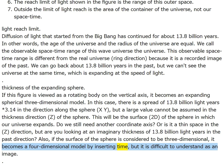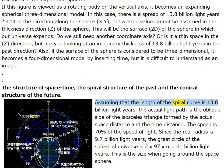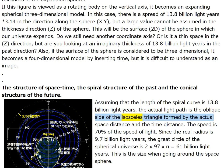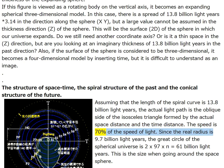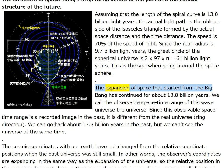The structure of space-time: the spiral structure of the past and conical structure of the future. Assuming the length of the spiral curve is 13.8 billion light years, the actual light path is the oblique side of the isosceles triangle formed by the actual space distance and the time distance — the speed is 70 percent of the speed of light. Since the real radius is 9.7 billion light years, the great circle of the spherical universe is 2 × 9.7 × π ≈ 61 billion light years.